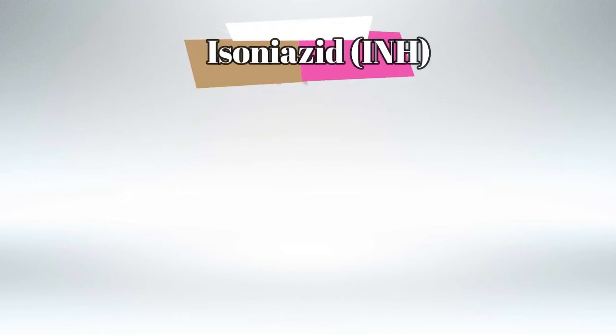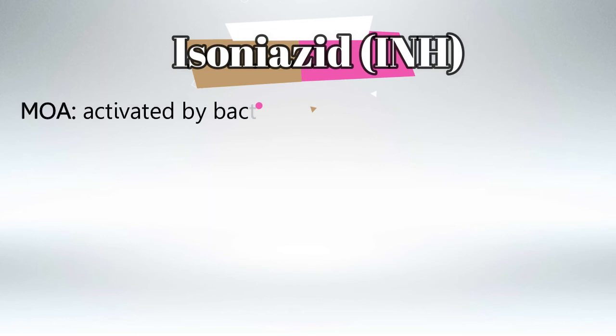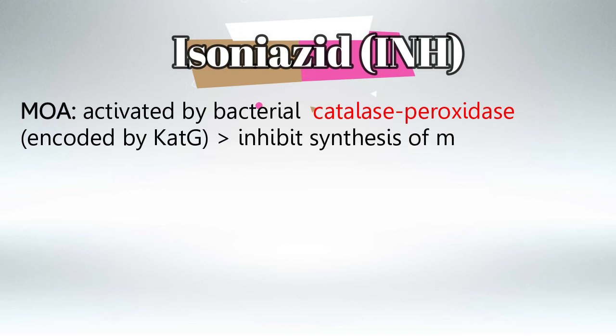Next we have isoniazid, also known as INH. The mechanism of action is that it gets activated by the bacterial catalase-peroxidase enzyme, which is encoded by the bacterial KATG gene, and this will inhibit the mycolic acid synthesis of the bacteria.